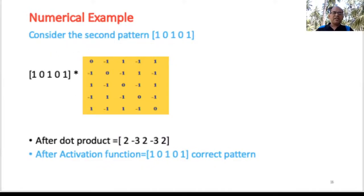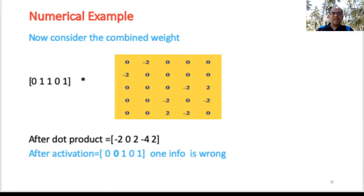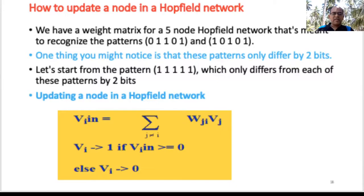However, when you consider the combined weights for both patterns together, there is a problem — one output is wrong. So we need to go through the process of updating nodes in the Hopfield network. If everything is fine, there is no issue; otherwise, you need to update the relevant node.